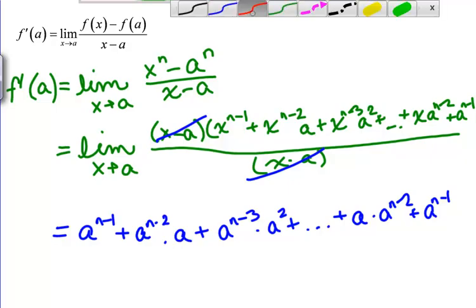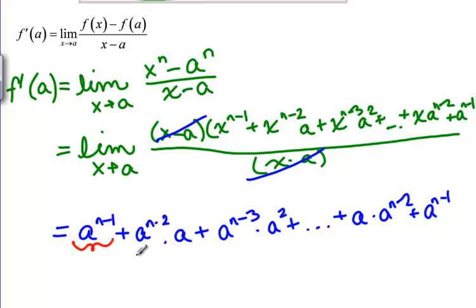This is A to the N minus 1. If we multiply these two together, we get A to the N minus 1. If we multiply these two together, we get A to the N minus 1. If we multiply these together, we get A to the N minus 1. And this one's already A to the N minus 1.